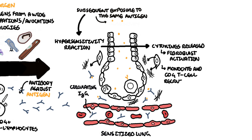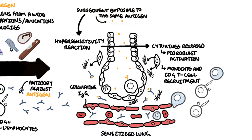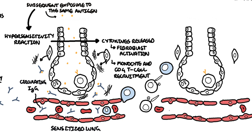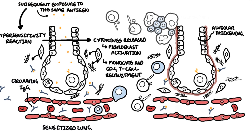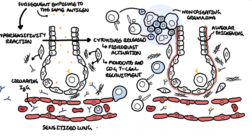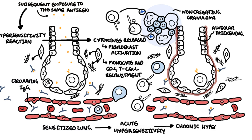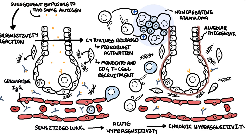It will also stimulate monocytes and cause T cell recruitment. As the disease progresses, the repeated hypersensitivity reaction — the allergic reaction — results in alveolar thickening and T cell-mediated non-caseating granulomatous formation. In summary, sensitized lungs react to re-exposure of a particular antigen, causing a hypersensitivity reaction. This can progress to chronic hypersensitivity pneumonitis, which is more characterized by T cell-mediated granuloma formation.